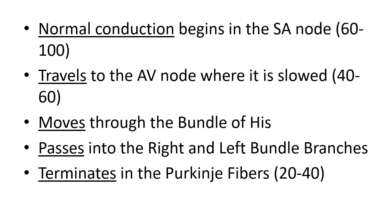Let's look at normal conduction in the adult patient. Electrical impulse conduction is generated by the SA node, the sinoatrial node, otherwise known as the pacemaker of the heart, with an intrinsic rate of 60 to 100 beats per minute. The impulse travels to the AV node where it is slowed down slightly; the AV node can generate 40 to 60 beats per minute. The impulse moves through the bundle of His, passes into the right and left bundle branches, and terminates in the Purkinje fibers, which have an intrinsic rate of 20 to 40 beats per minute. If there is a complete block between the atria and the ventricles, the Purkinje fibers can generate impulses at about 20 to 40 beats per minute, which really isn't compatible with good cardiac output, so we need to do something for that patient pretty quickly.